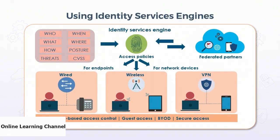Many modern enterprises implement an identity services engine — for example, Cisco ISE. Services revolve around who, what, how, when, and where subjects access objects. Threat management and vulnerability databases like CVSS are inputted into the ISE, which generates access policies and authorization profiles. These profiles support role-based access control, guest access, mobile device management with BYOD, and other secure access methodologies. Federated partners can provide identity services for endpoints and network devices in wired, wireless, or VPN environments, supporting devices like workstations, laptops, tablets, IP phones, and mobile phones.